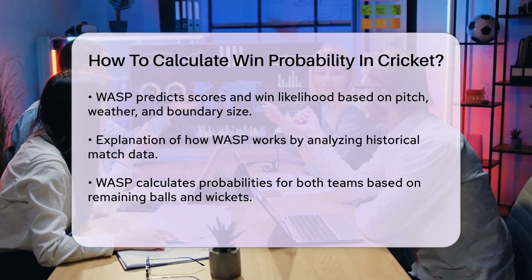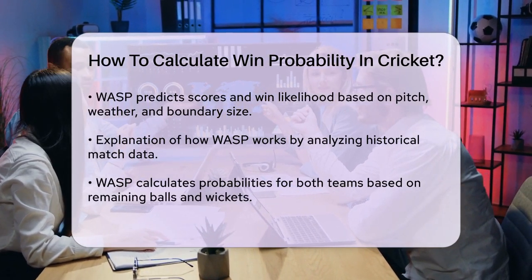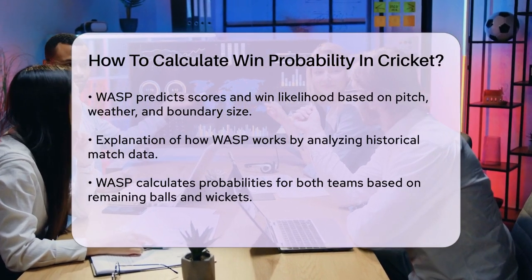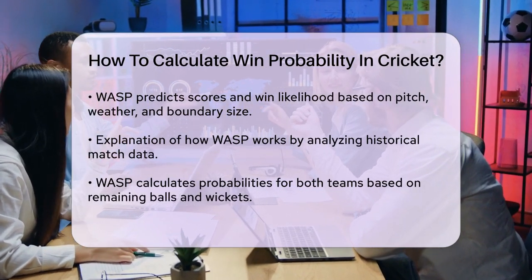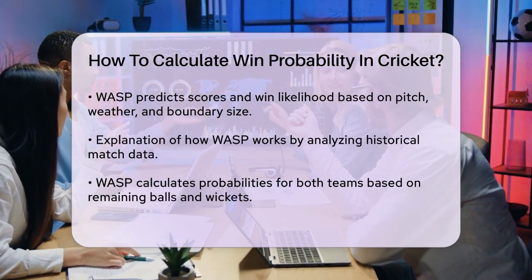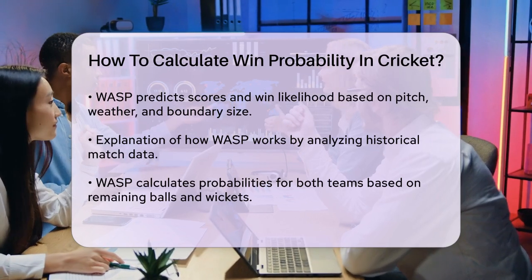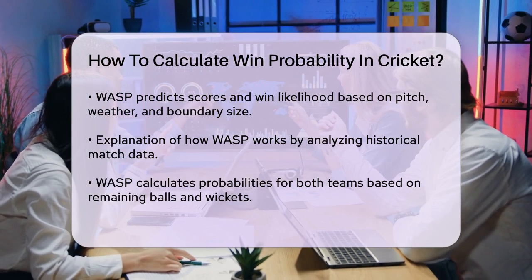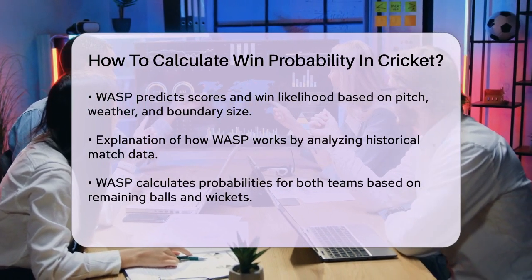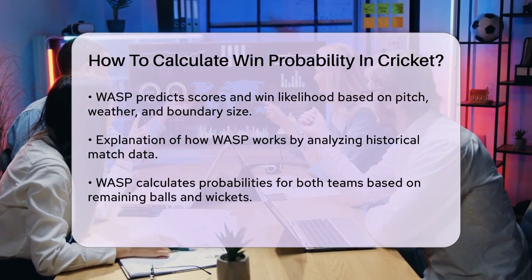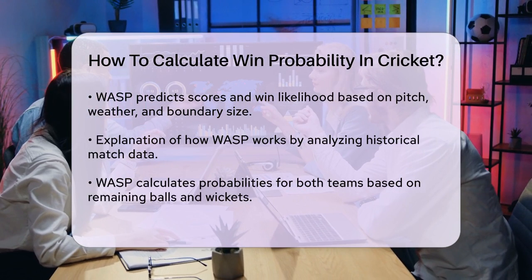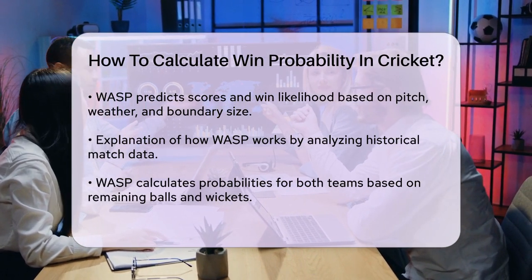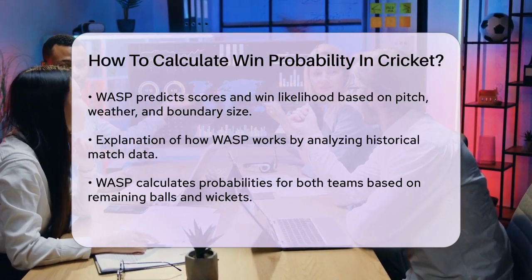Here's how it works. For the team batting first, WASP predicts the final total based on the number of balls and wickets remaining. For the team batting second, it estimates the probability of winning based on the balls and wickets remaining, the runs scored so far, and the target score. The model uses dynamic programming to calculate these probabilities, ensuring that the estimates are robust even in rare game situations.